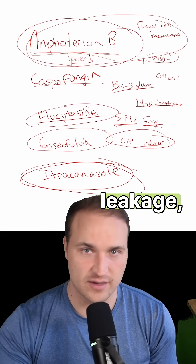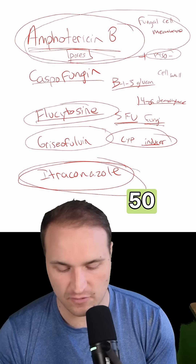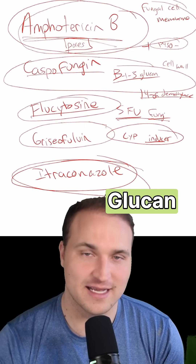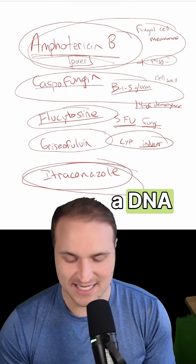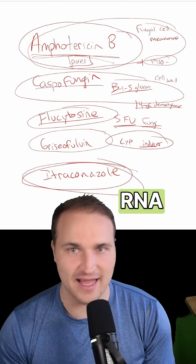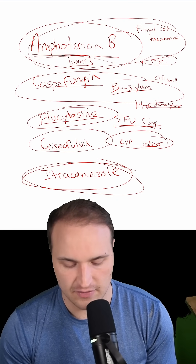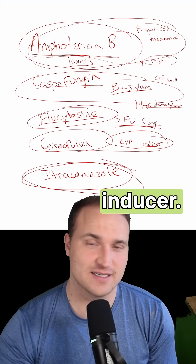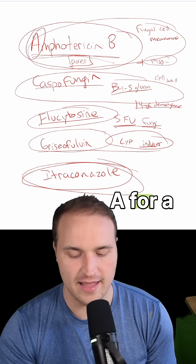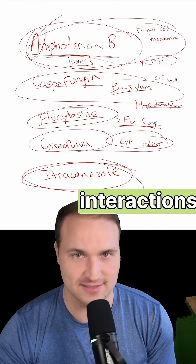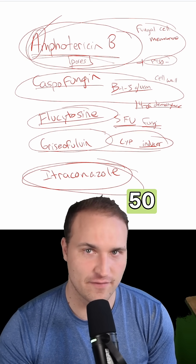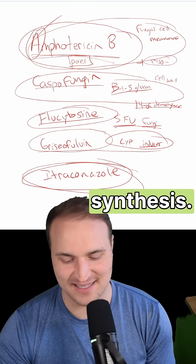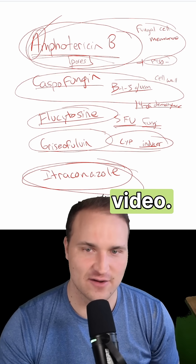Caspofungin inhibiting beta-1,3 glucan synthesis, flucytosine being a DNA and RNA synthesis inhibitor, and griseofulvin being a CYP inducer. I like to remember azoles for a lot of drug interactions via CYP450 inhibition, and this affects ergosterol synthesis. We'll see you guys in the next video.